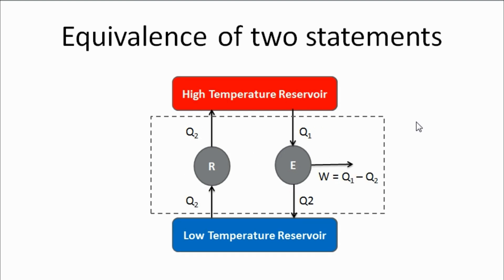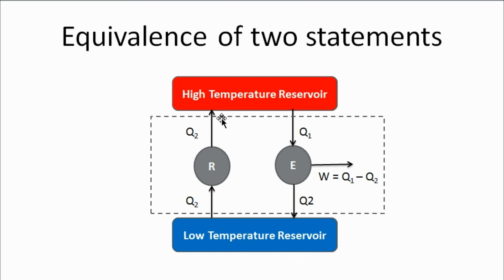Now, to check if violating the Clausius statement leads to a violation of the Kelvin-Planck statement: consider the system shown in the figure, with high and low temperature reservoirs connected to a heat engine and an ideal refrigerator. An ideal refrigerator is a violation of the Clausius statement — it transfers heat from the low temperature reservoir to the high temperature reservoir without consuming any form of energy. If we give heat Q1 to the engine, it produces W amount of work and transfers Q2 to the low temperature reservoir. Considering these two systems as a single system shown by the dotted line, the low temperature reservoir gives off Q2 to the refrigerator and receives Q2 from the engine — so net heat transfer at the low temperature reservoir is zero. The high temperature reservoir receives Q2 and gives Q1 to the engine, so the net heat loss by the high temperature reservoir is Q1 minus Q2.